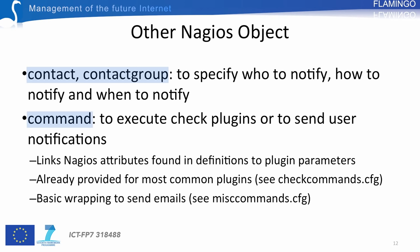Another important object is the command object. It is used to execute check plugins or to send user notifications. These objects link Nagios attributes defined in object definitions to plugin parameters. They are already provided for most common plugins, as seen in checkcommands.cfg. They also serve as a basic wrapper to send emails, as observed in misscommands.cfg.